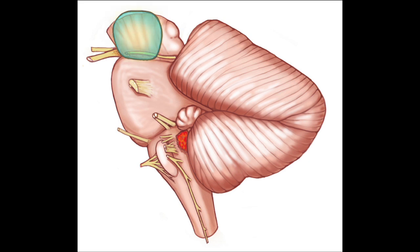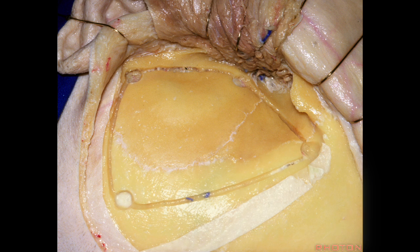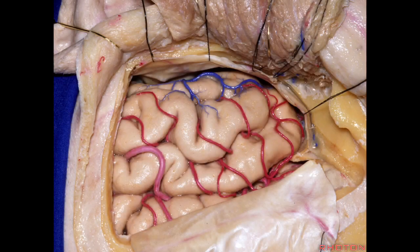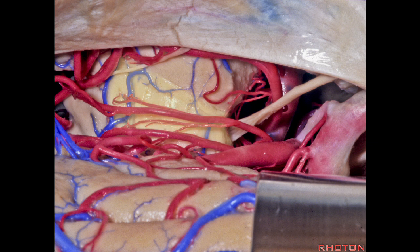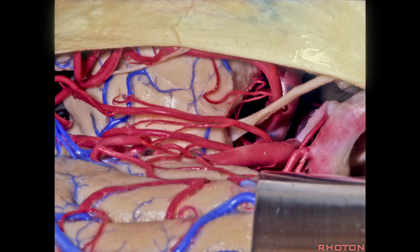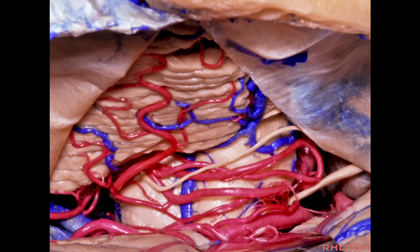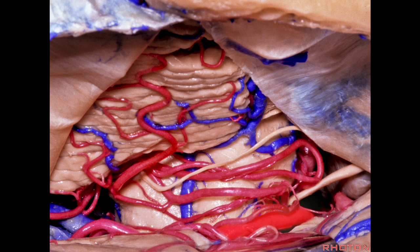Here's the subtemporal approach. We're on the left side — frontal, occipital back here — and we work under the temporal lobe. It delivers us down to the side of the peduncle at the midbrain-pons junction. We see the trochlear nerve, cranial nerve four. We can get a little bit lower if we divide the tent behind where the fourth nerve enters the tent, and that gets us down to where we see a little bit of the trigeminal nerve. It gives us the lateral side of the peduncle between three and four and the posterior cerebral artery.